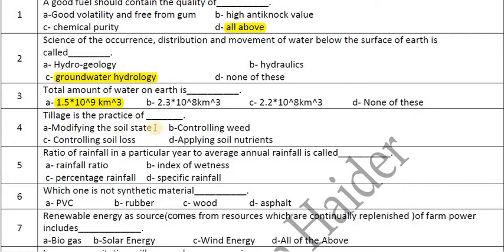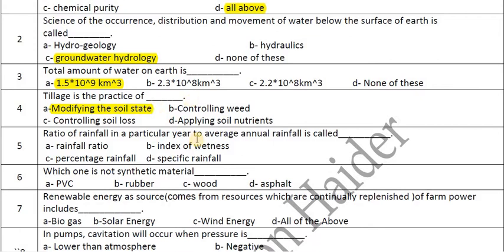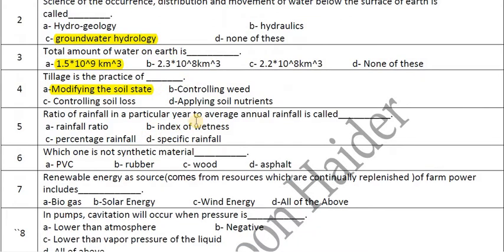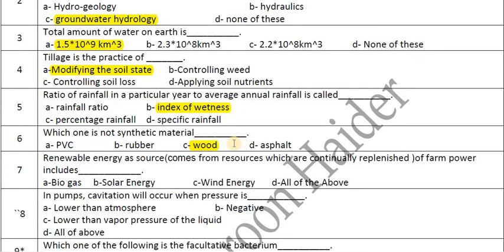Tillage is the practice of modifying the soil state. The ratio of rainfall in a particular year to average annual rainfall is the index of wetness. Renewable energy as a source of farm power includes biogas, solar energy, wind energy — all of the above.